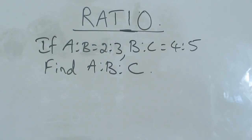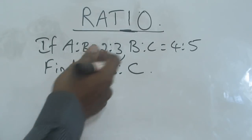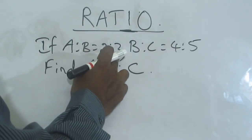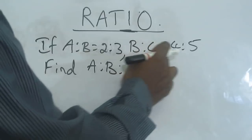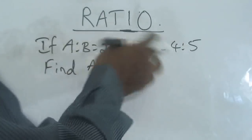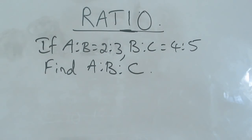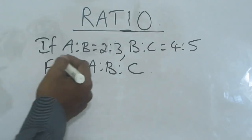We know how to do this in different methods. That's the usual method. Here B value is 3, and here B value is 4, so you have to make a single same value. How to do this in shortcuts?